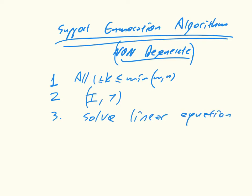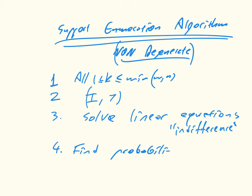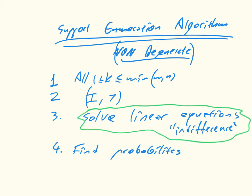Step three is to solve the linear equations. These are linear equations that ensure indifference — they come directly from the best response condition. Step four is to find probabilities, because step three won't necessarily yield probability vectors, so we normalize them. And step five is to check best response.